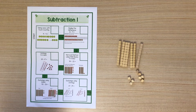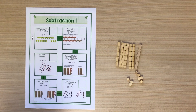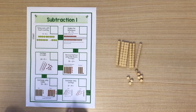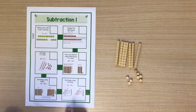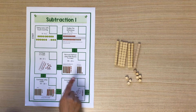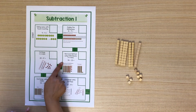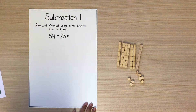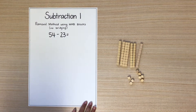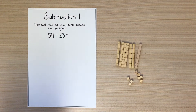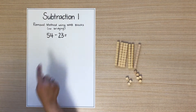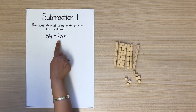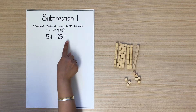Today we are learning about subtraction. I'm going to teach you how to use the removal method using MAV blocks. Let's start by reading the question: 54 take away 23 equals.